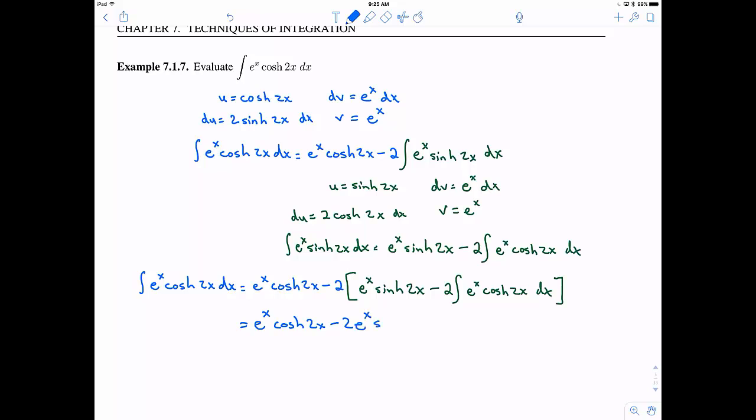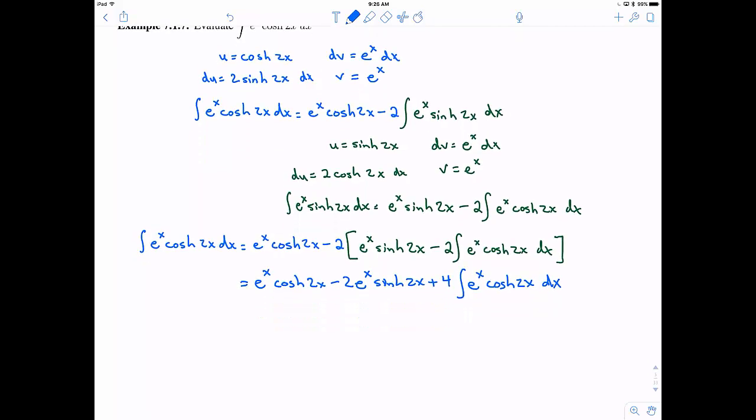So then let me just simplify really quick. So when I distribute this negative 2. I get negative 2 e to the x hyperbolic sine of 2x. And then when I distribute the negative 2 again. I get positive 4, right? Because negative 2 times negative 2. And then the integral of e to the x hyperbolic cosine of 2x dx.